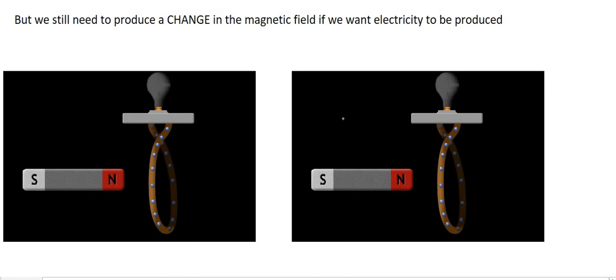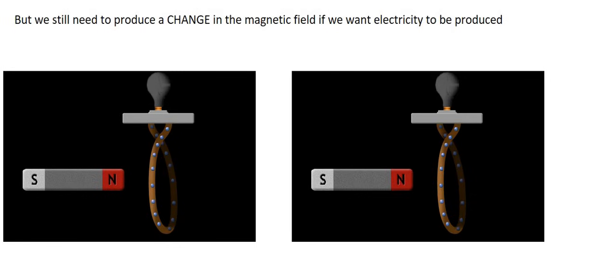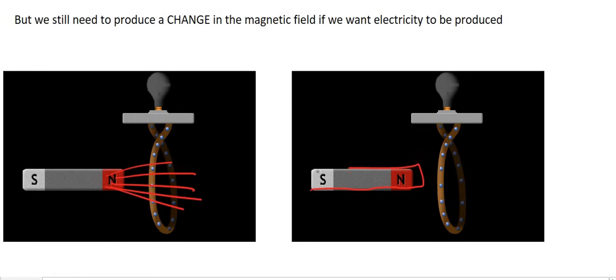In the previous lesson, we learned how to calculate magnetic flux. But one or two lessons before that, we said that if you want to produce electricity, the magnetic field has to change. If you just hold the magnet in the same position, there was no electricity. There was lots of magnetic flux, but if you do not move that magnet and keep the magnetic flux the same, nothing will happen. All magnets produce magnetic flux, but if you do not cause a change, nothing will happen.